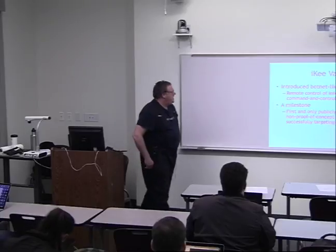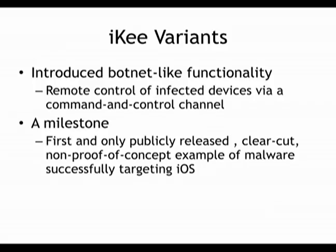There was another proof-of-concept worm that spread on Symbian devices via Bluetooth, so vulnerable Symbian devices within a few feet of each other in a crowd could in principle spread. In practice, if you look at epidemiology, you need a certain density of vulnerable, infectable organisms for anything to spread — in both cases, vulnerable devices were sparse enough that it didn't spread very far. They put in botnet functionality, making it the first real malware for iOS, though not very harmful. But all this only affects you if you jailbreak your device and are sloppy about the security consequences.